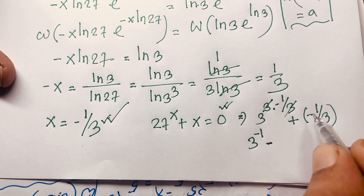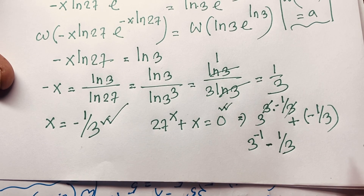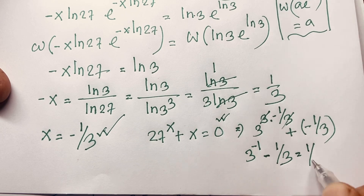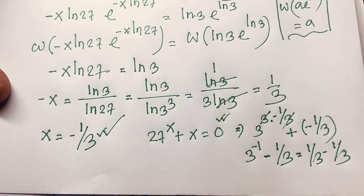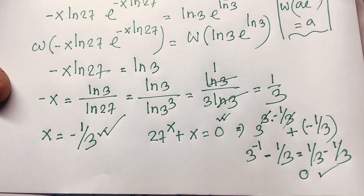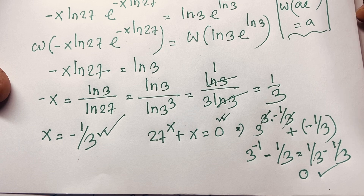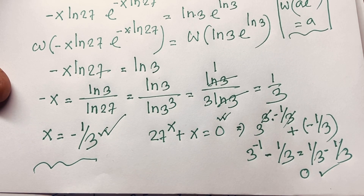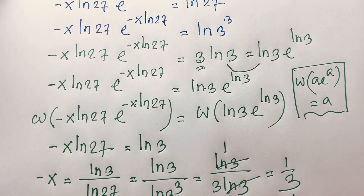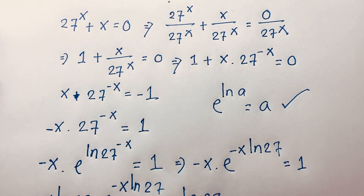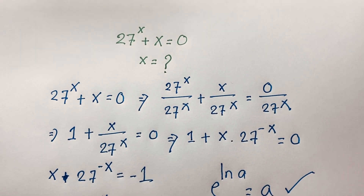3^(-1) = 1/3 and x = -1/3, so they cancel out and we get 0. So in this math olympiad question our final answer is x = -1/3. This is the value of x. Thank you all. If you enjoyed this video please subscribe to my channel for more interesting videos. Goodbye, take care!